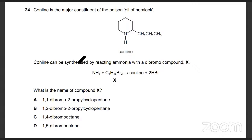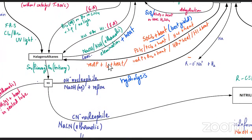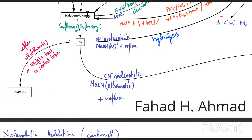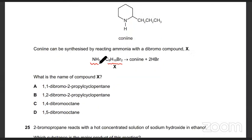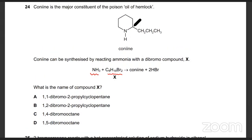The next question: a compound can be synthesized by the reaction of ammonia with a dibromo compound. Ammonia with a halogenoalkane — the halogen is going to be substituted by ammonia. That's what's going to happen. The bromine is going to be substituted by NH2, and HBr is going to be formed. That's the overall reaction.